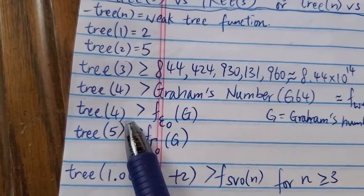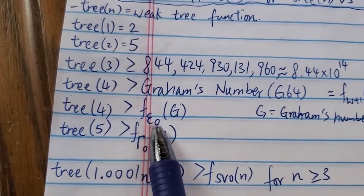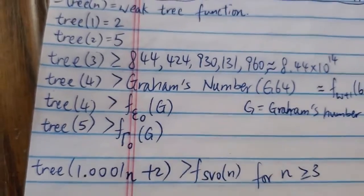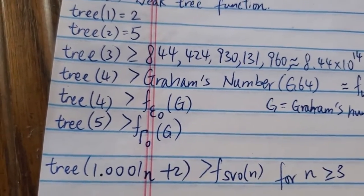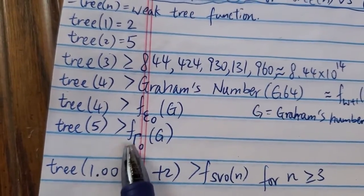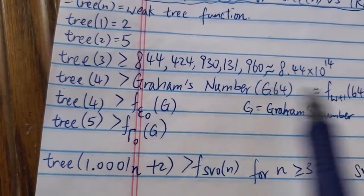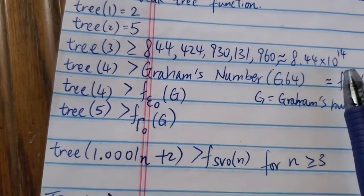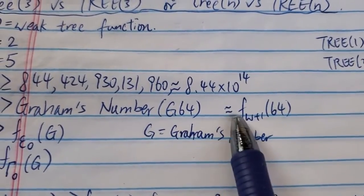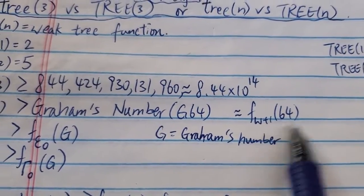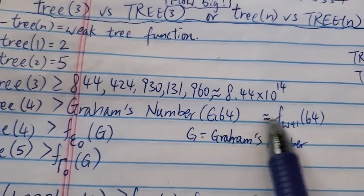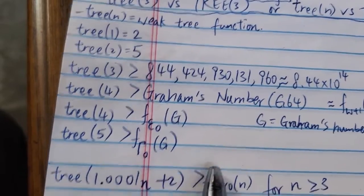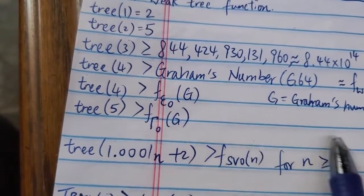3-4 can also be shown to be greater than F of Epsilon-naught applied to G, where G stands for Graham's number and F stands for the fast-growing hierarchy. And 3-5 is greater than F of Gamma applied to G. Gamma is a much, much bigger ordinal than Epsilon-naught. Graham's number itself is somewhere around F of (omega plus 1) applied 64 times — so 3-4 and 3-5 are way, way bigger. Proofs and sources are from the Googology wiki.